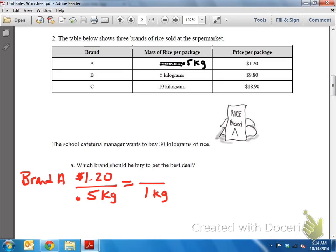So in order to get from 0.5 to 1, we multiply by 2, or we divide by 0.5, and we're going to get $2.40 per 1 kilogram. And the question asks us, the school cafeteria manager wants to buy 30 kilograms. So how do we get from 1 to 30? We multiply by 30 on both bottom and on the top, and we're going to get $72 for 30 kilograms of rice.